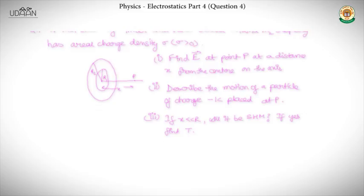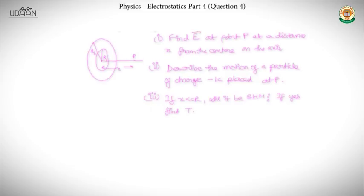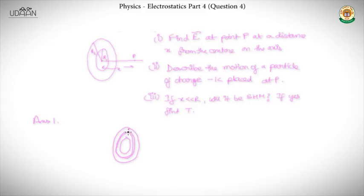This is similar to the previous question but a little different. Here instead of a ring we have a disk. But we can split the disk into small rings, calculate E due to these small rings, and then add them up. This is the simplest way to solve it.